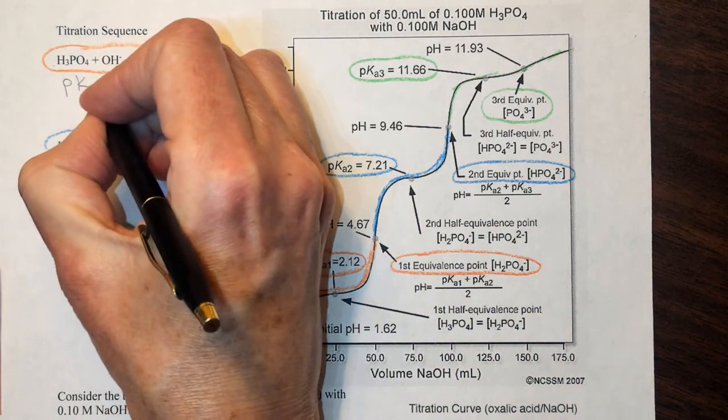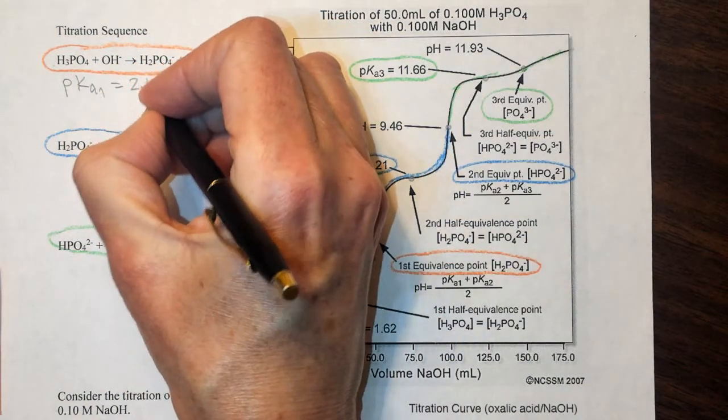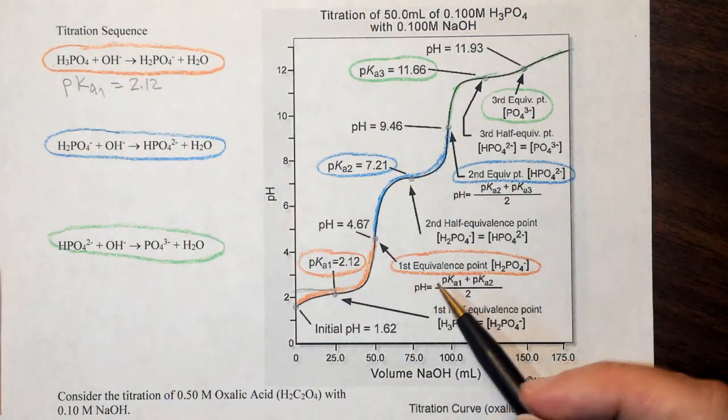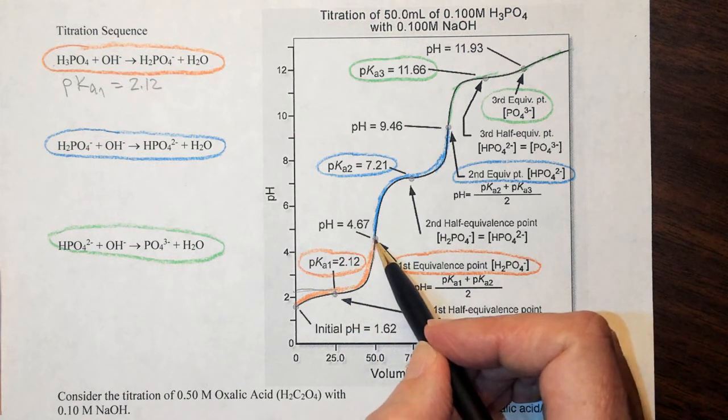So let's just go ahead and write this here. We have pKa1 equals 2.12. As we continue the titration curve, we will get to the first equivalence point.